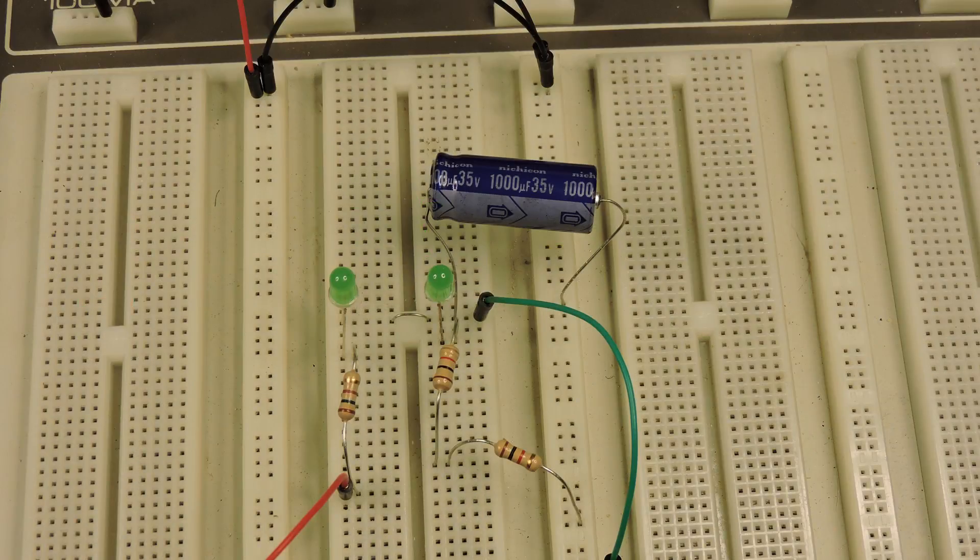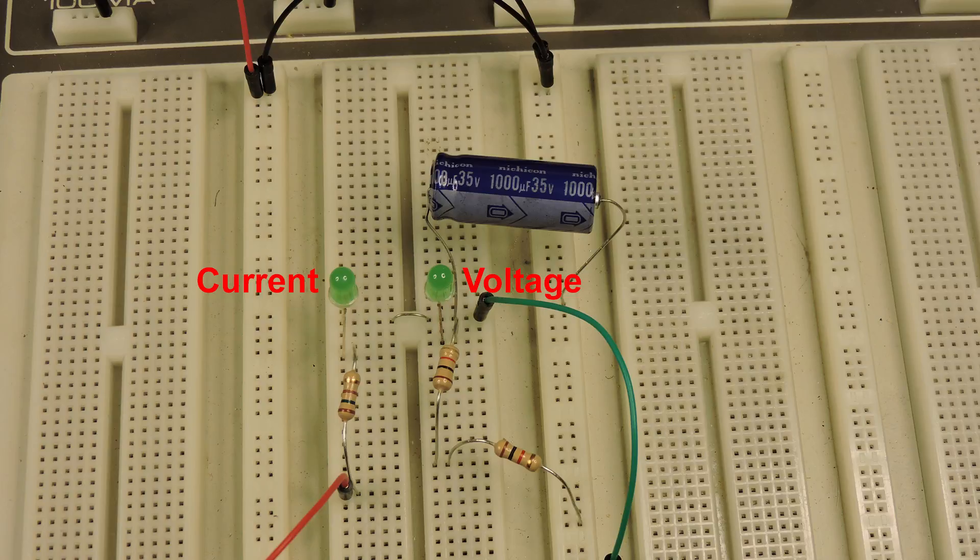Here's the setup. On the left is the current diode and on the right is the voltage diode that is across the capacitor we're going to charge.